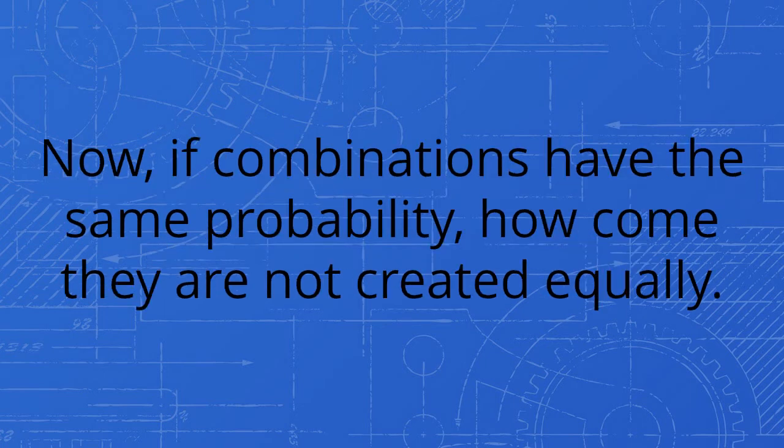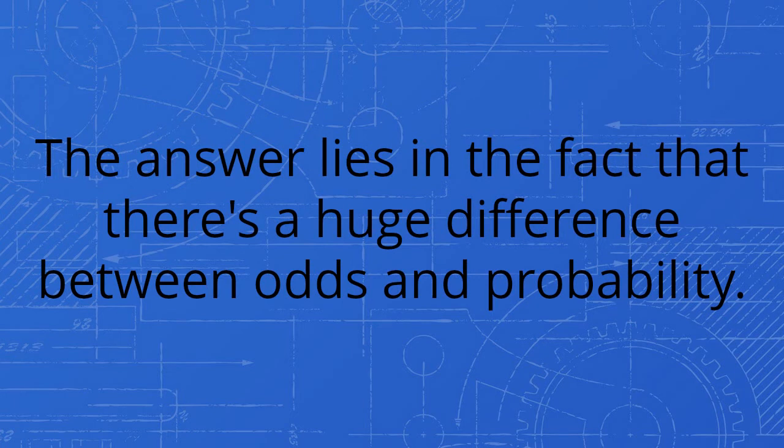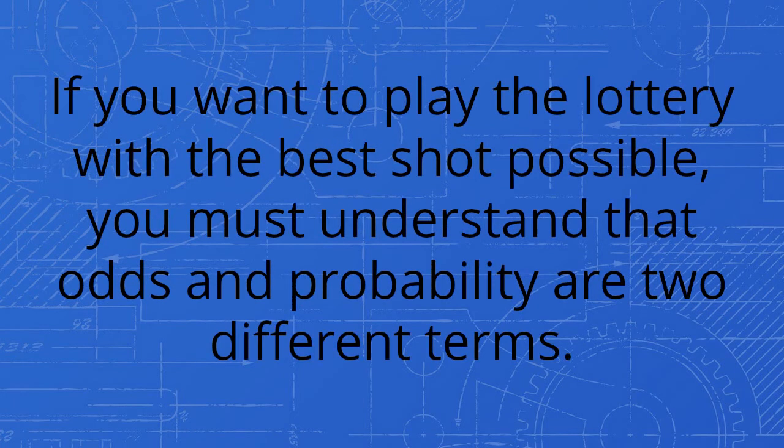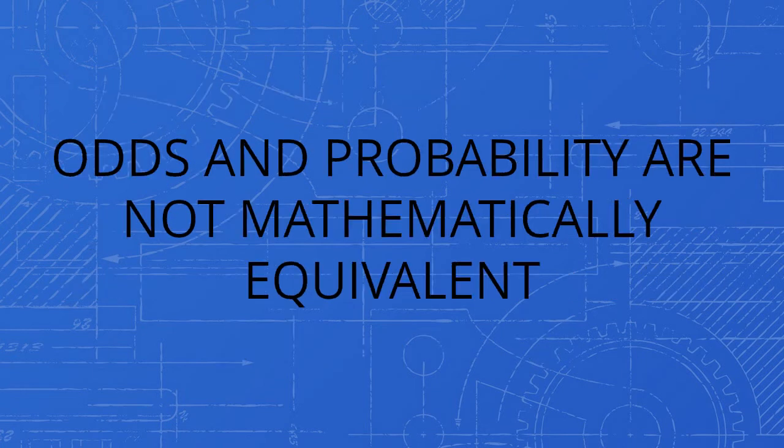Now, if combinations have the same probability, how come they are not created equally? The answer lies in the fact that there's a huge difference between odds and probability. If you want to play the lottery with the best shot possible, you must understand that odds and probability are two different terms. Odds and probability are not mathematically equivalent.